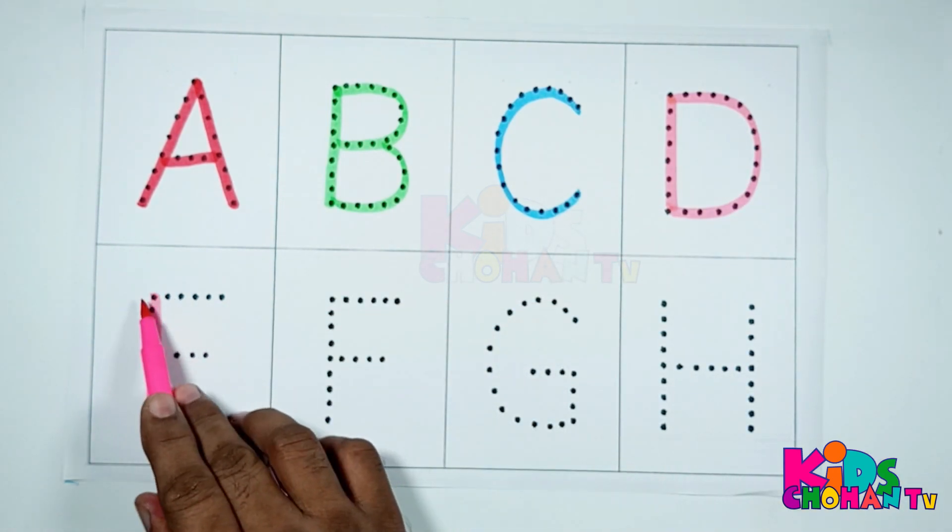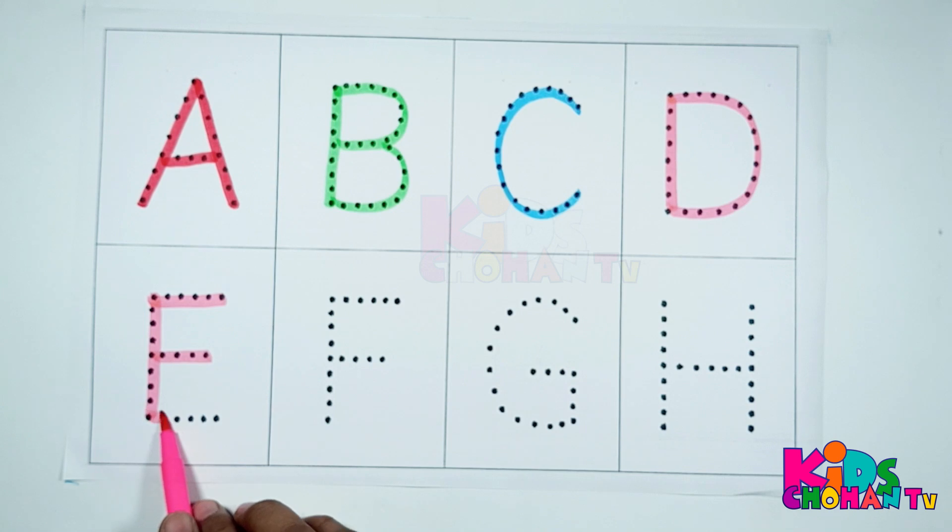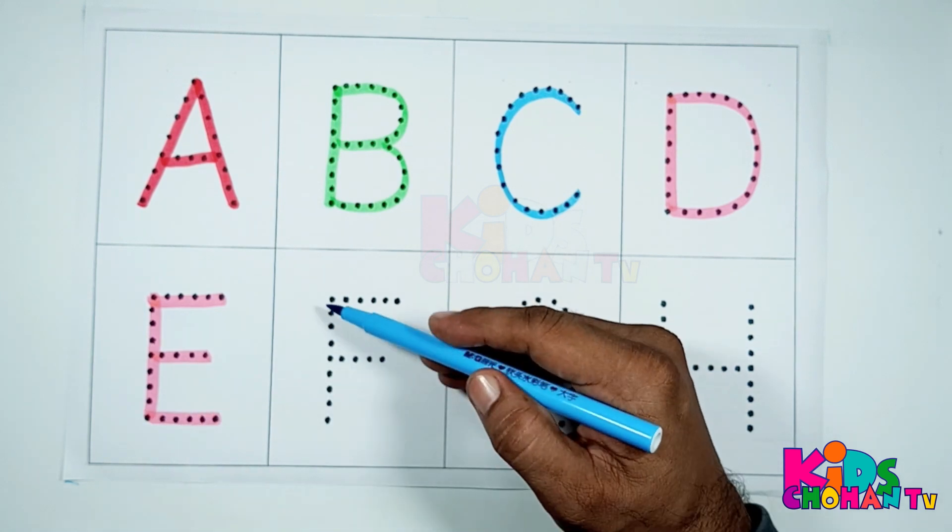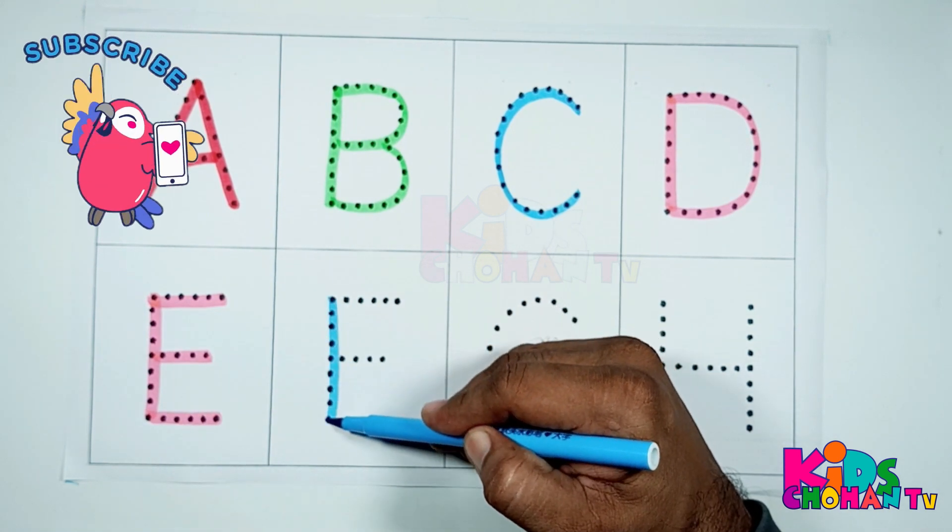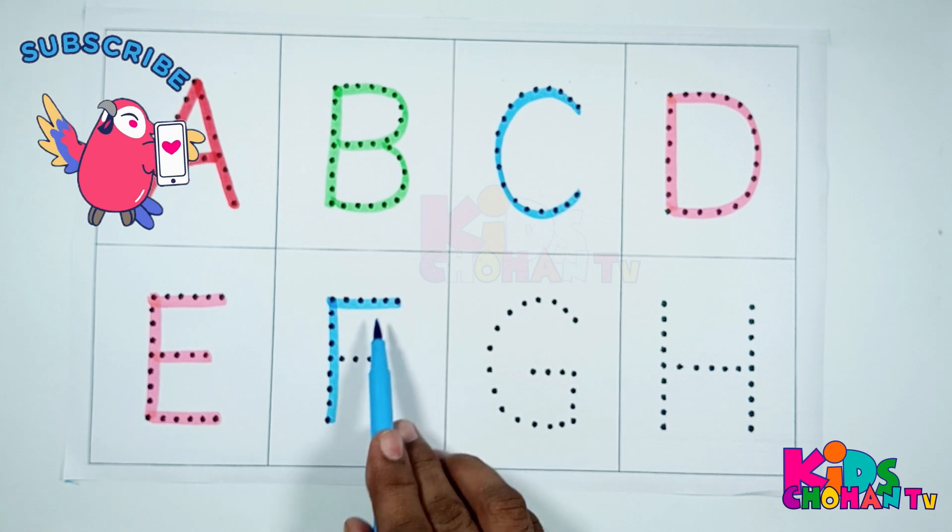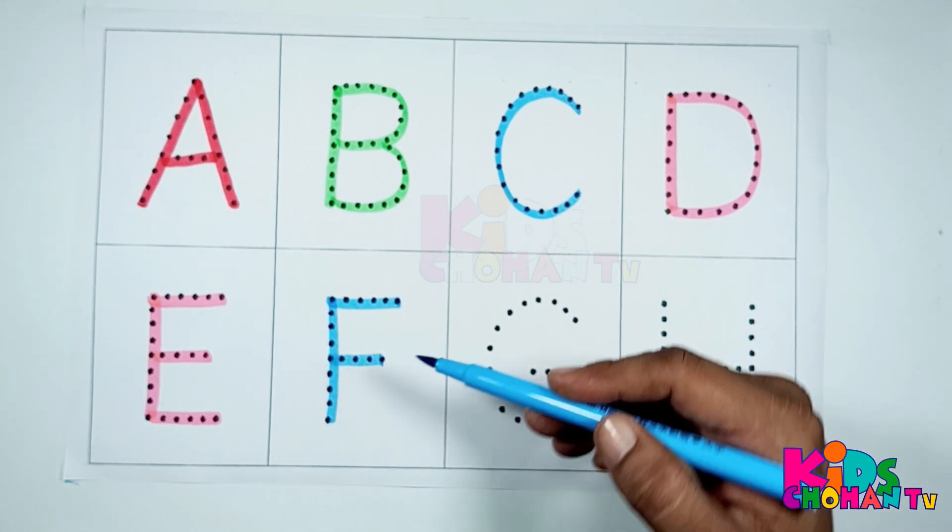This is letter E. E for eagle. Now kids, we are tracing letter F. F, F, F for fox.